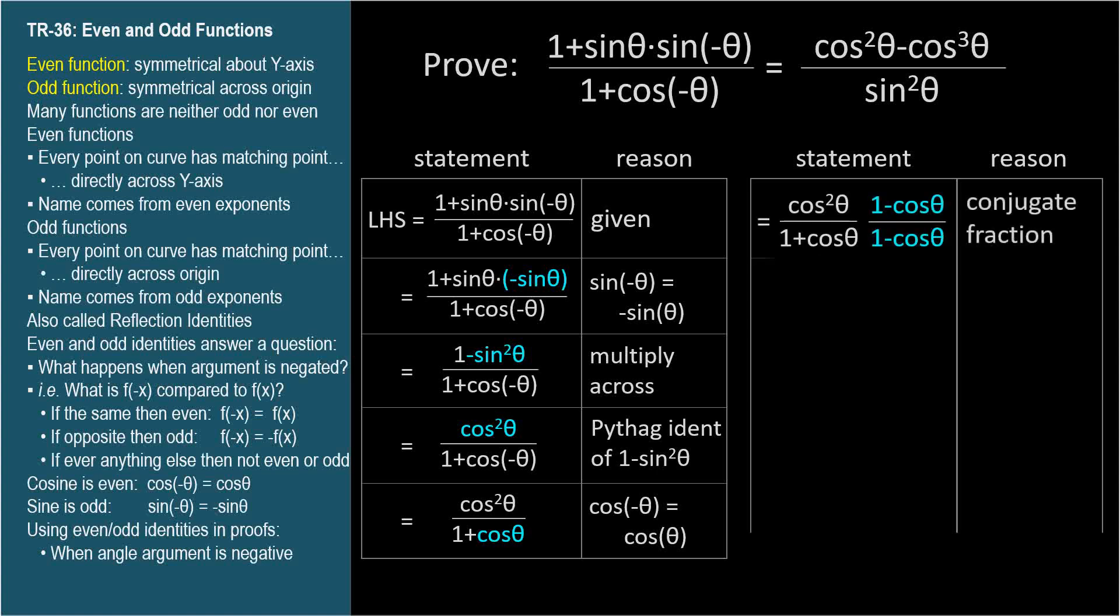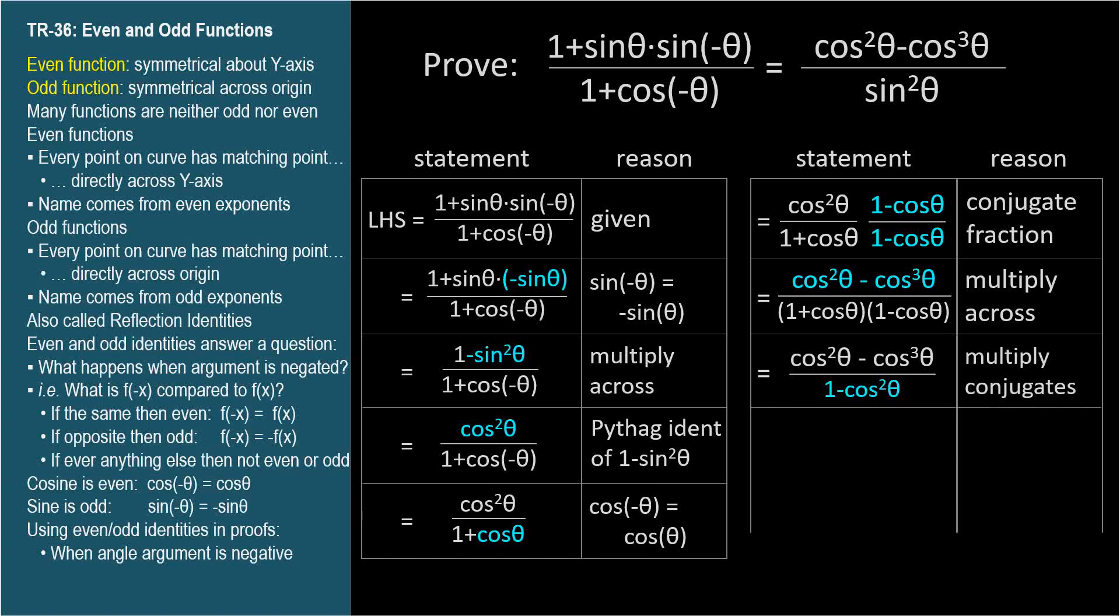The denominator is a good candidate for a conjugate pair, so we multiply by its conjugate fraction 1 minus cosine theta over 1 minus cosine theta. Multiplying the numerator across yields cosine squared theta minus cosine cubed theta, and we're on the right track because checking above, this matches the numerator of the right-hand side. Multiplying the conjugates in the denominator yields the difference between their squares, 1 minus cosine squared theta. Of course, this is identical to sine squared theta, and we've proven the identity.